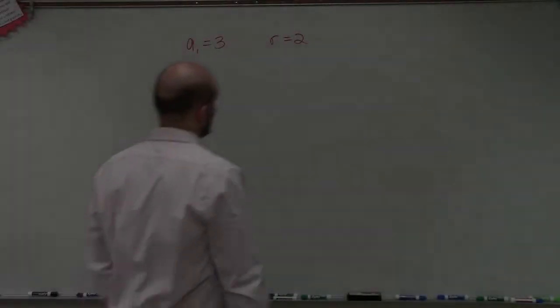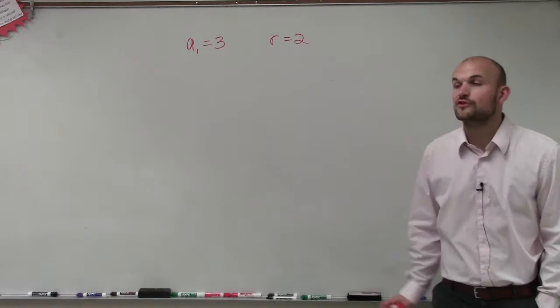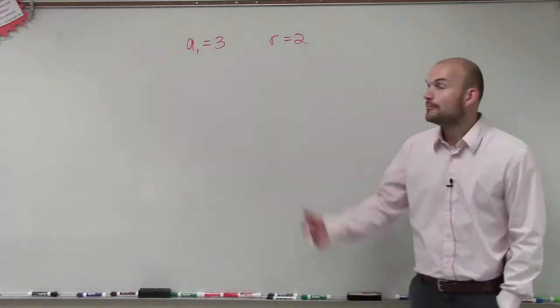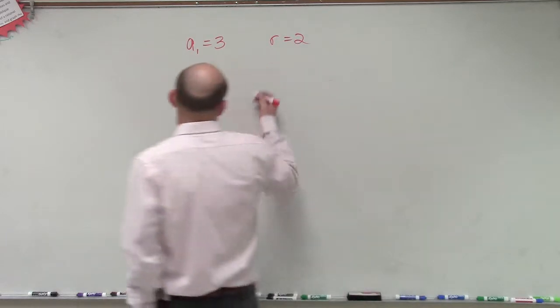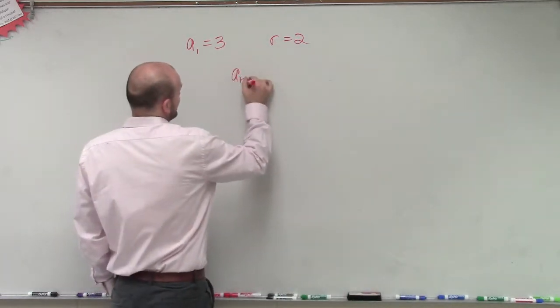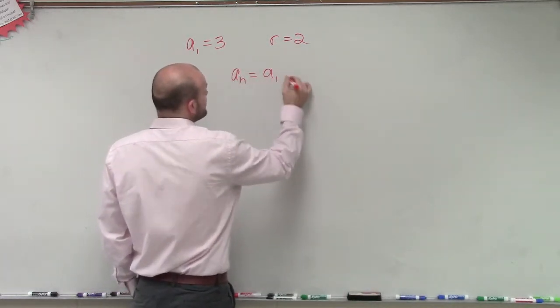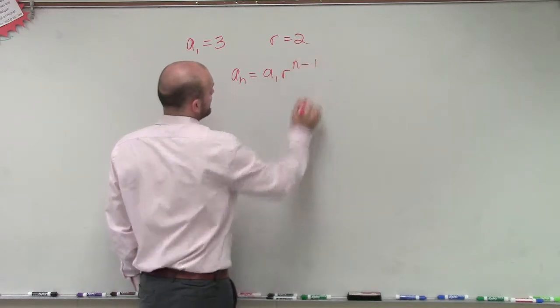This problem asks us to find the first five terms. We need to remember, when we're looking at a geometric sequence, we have to apply our formula, which says a_n equals a_1 times r to the n minus 1.